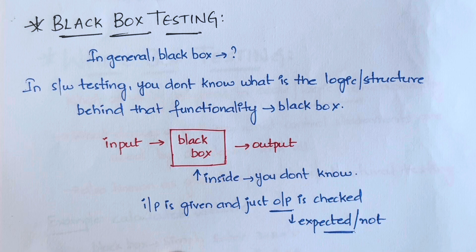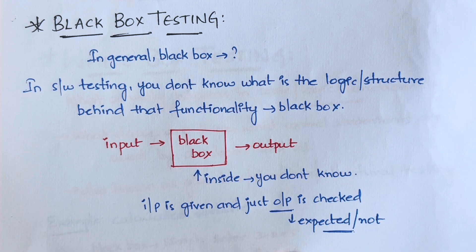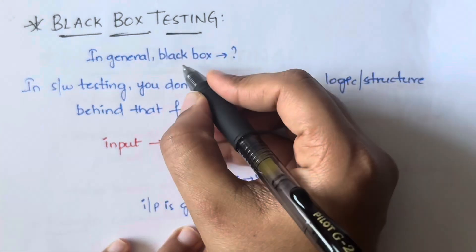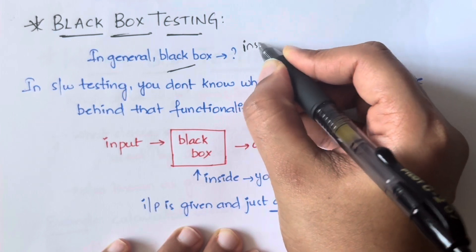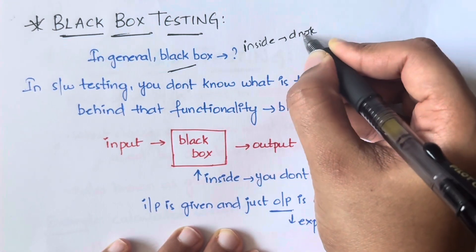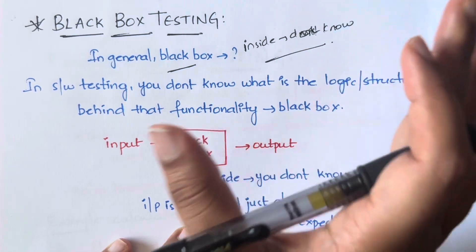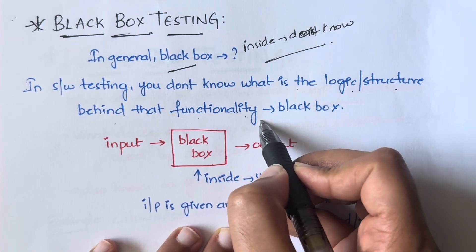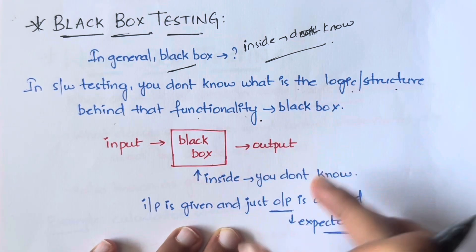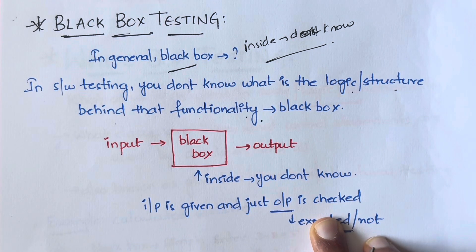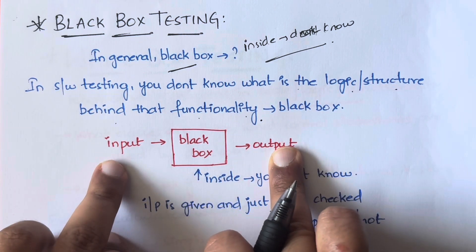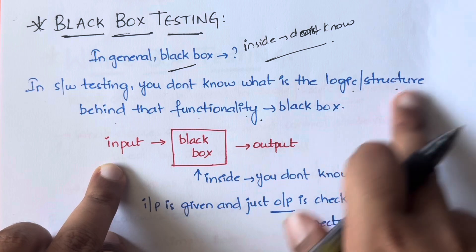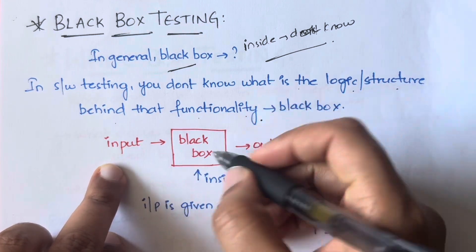First, in general, what do you mean by a black box? When you hear the word black box, what do you understand by that? What is happening inside — you don't know. If you don't know something, or if you think somebody is hiding something from you, you say everything is a black box. So in general, black box means what is happening inside you don't know. Same here in testing — you don't know what is the logic or structure behind the functionality you're testing. You just give the input and you just get the output.